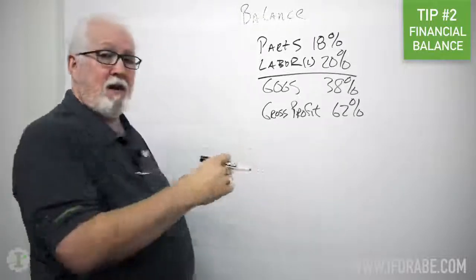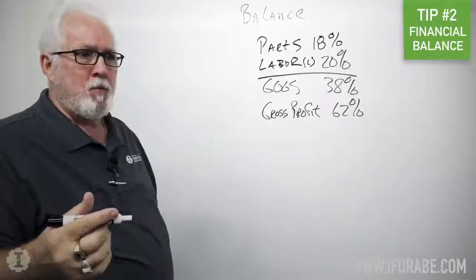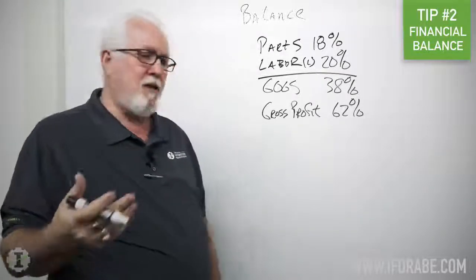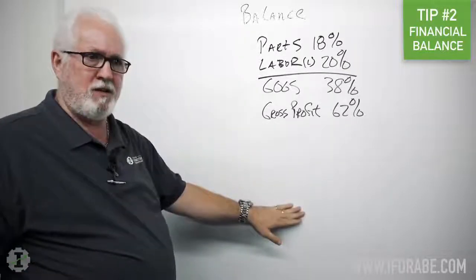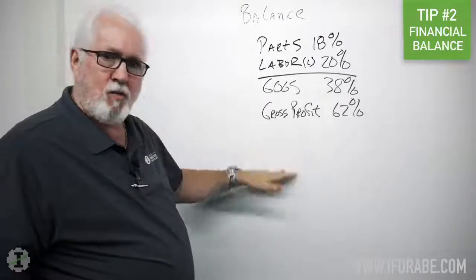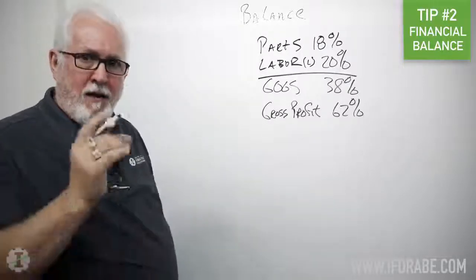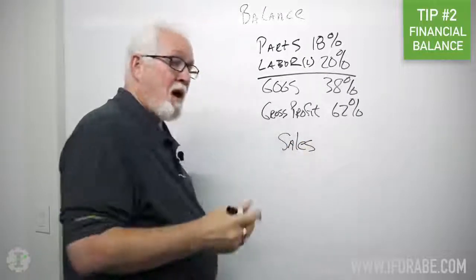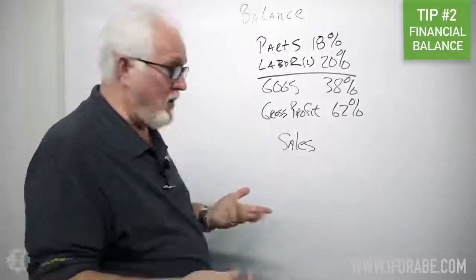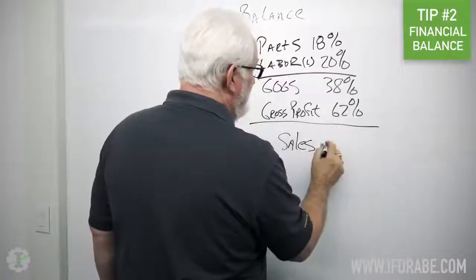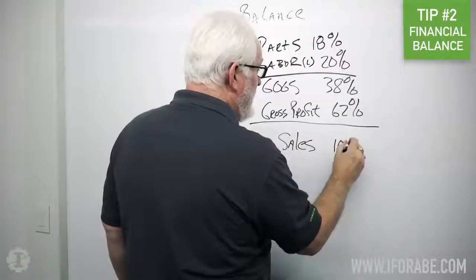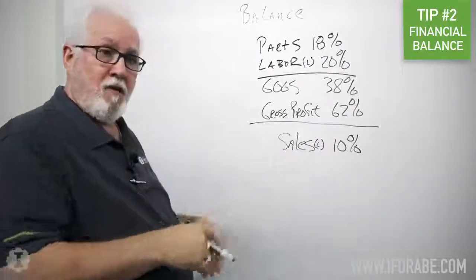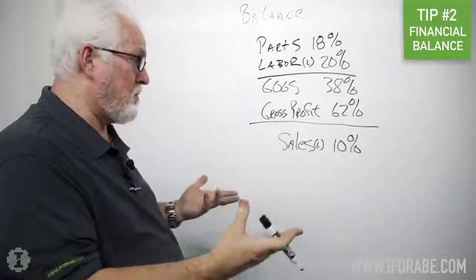So once I have gross profit, now we have a thing called fixed expenses. Now if you're working with a consultant or a business coach or something like that, they're probably going to break your fixed expenses into as many as 10 or 12 categories. In this case we're going to break them into three. So we have our cost of sales. That's whoever is selling my product, my parts and my labor. And we want that to be about 10%, and that also is a loaded cost meaning it takes care of FICA and FUTA and all the costs for the service advisor or the sales team, whoever's selling my product.